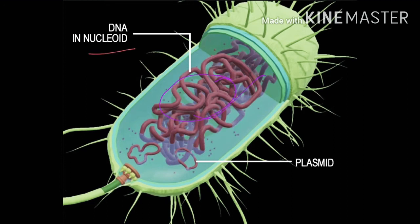Nucleoid is the name for DNA present in prokaryotic cells because it is not enclosed within a nuclear membrane. In prokaryotic cells, the DNA is circular and embedded in the cytoplasm with no nuclear membrane. There is no histone protein associated with prokaryotic DNA. That DNA of prokaryotic cells is called nucleoid.